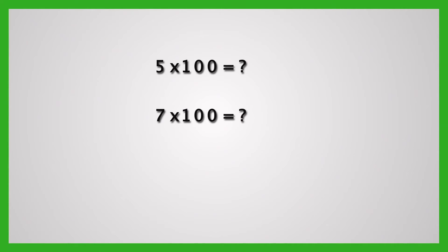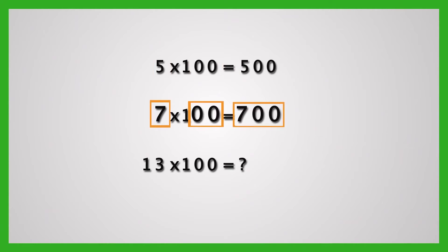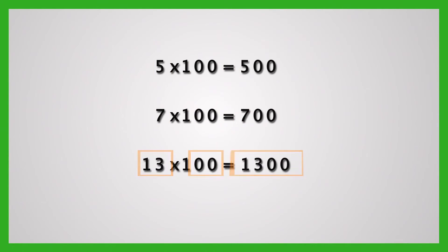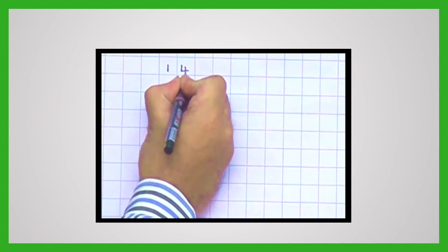Similarly, any number multiplied by 100 gives the product, which is the original number with two zeros placed after it. So 5 multiplied by 100 is 500. 7 multiplied by 100 is 700. 13 multiplied by 100 is 1300. And so on.